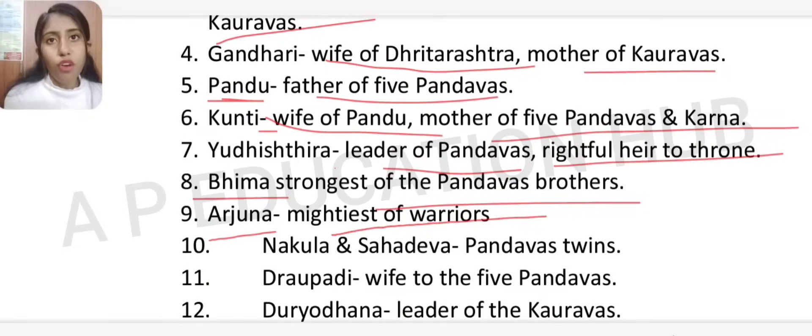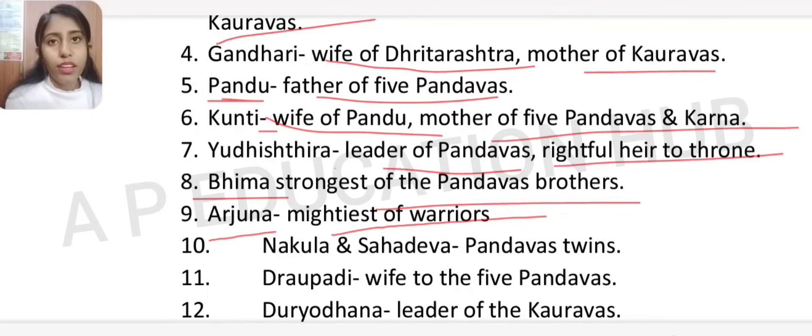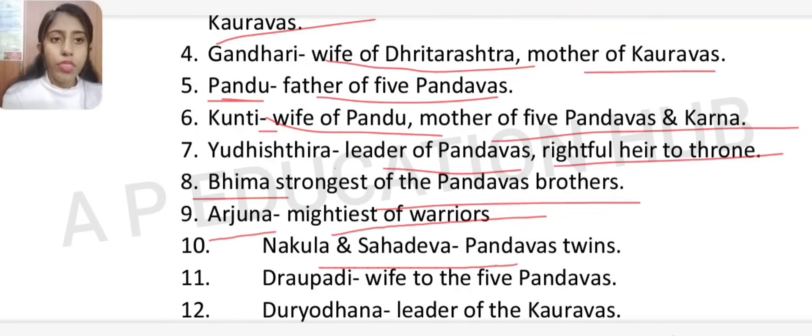Arjun is the mightiest of warriors and is guided by Lord Krishna throughout the Mahabharata. Nakul and Sahadev are the Pandava twins. Kunti was actually the mother of only three Pandavas: Yudhishthira, Bhim, and Arjun. Nakul and Sahadev are sons of Pandu's second wife, Madri.